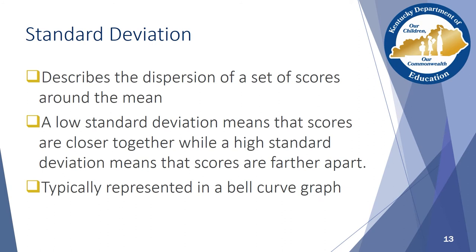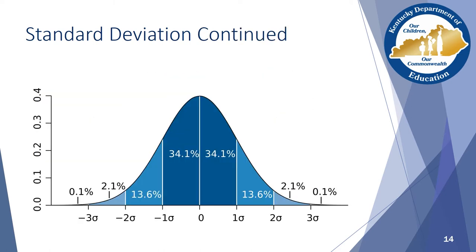Standard deviation is another common measure of variability. Like range, it helps us understand how spread out the data is, but it goes a step further by exploring how the data is distributed around the mean. When a standard deviation measure is low, it means that the scores are clustered around the mean, while a higher standard deviation means that the scores are more spread out. Standard deviation is represented graphically with a bell curve. The tall vertical line in the middle, labeled zero on this chart, represents the mean. In this example, 34.1% of scores fall within one standard deviation of the mean in either direction, meaning roughly 68% of scores are clustered together near the mean.